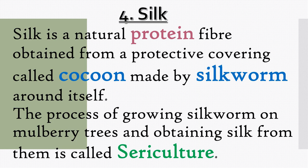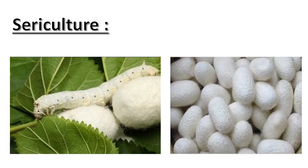The next fiber is silk. Silk is a natural protein fiber obtained from a protective covering called a cocoon, made by the silkworm around itself. The process of growing silkworms on mulberry trees and obtaining silk from them is called sericulture. In the diagram, it is shown that the silkworm is reared on a mulberry tree; basically, silkworms feed on the leaves of this tree. The white-colored balls are the cocoons.